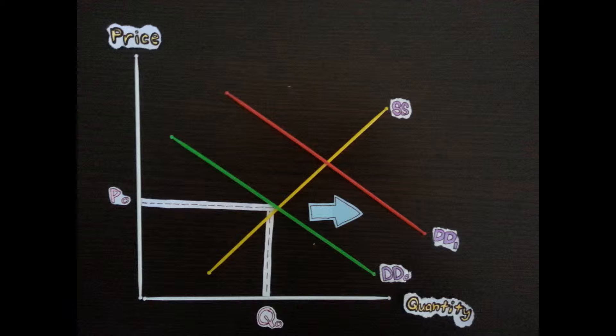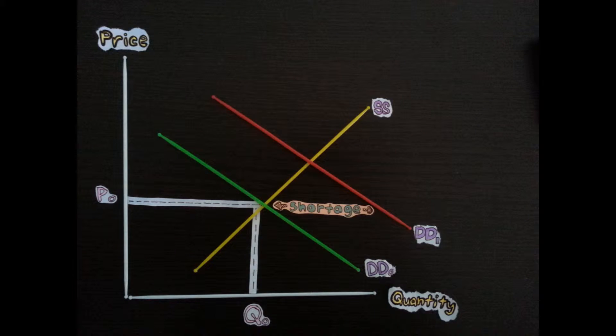The demand curve shifts from DD0 to DD1, and if the price of margarine remains the same at P0, there would be a shortage of margarine as shown in the diagram.